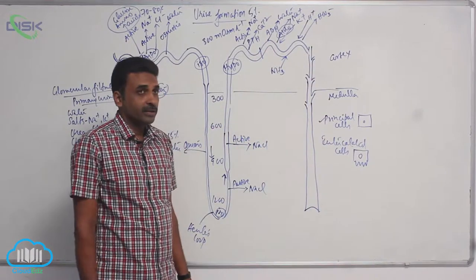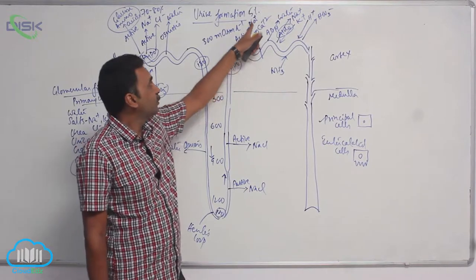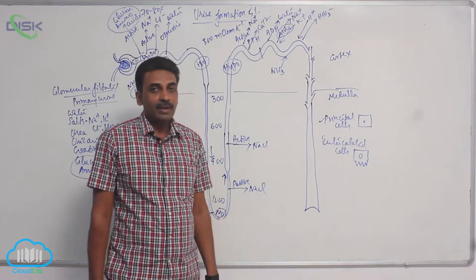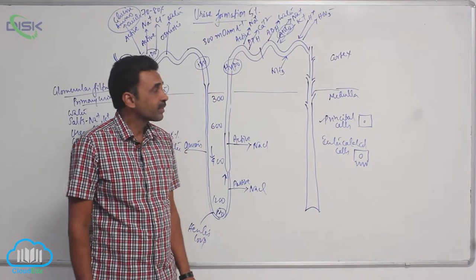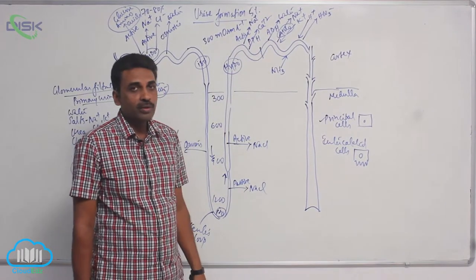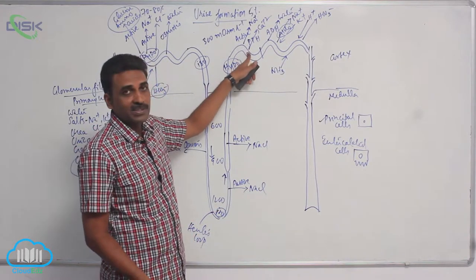At the beginning of the distal convoluted tubule, around 5% of sodium chloride is actually transported. Under the influence of parathormone, if any traces of calcium are present, they are taken back into the body.